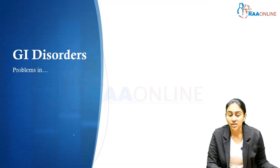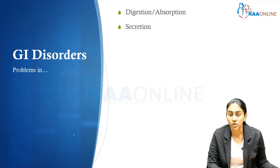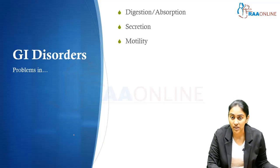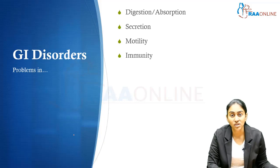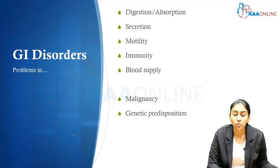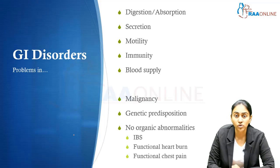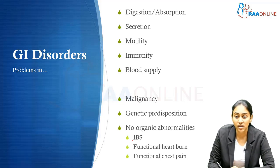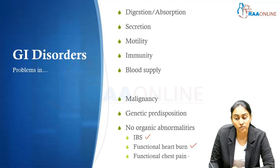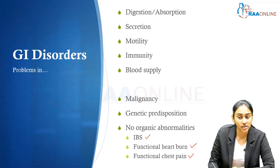Now let us look at the various gastrointestinal disorders. There could be problems in digestion or absorption, a primary problem in secretion, a problem with motility, a problem with immunity or dysregulated immune function, a problem in blood supply, or a malignancy or genetically predisposed condition. Sometimes you may have gastrointestinal disorders without any organic abnormalities, which is what we would see in irritable bowel syndrome, functional dyspepsia, and functional chest pain cases.